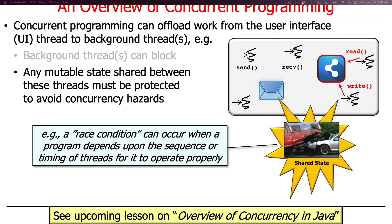Unlike sequential programs, any mutable state shared between multiple threads must be protected to avoid concurrency hazards. Mutable state refers to fields or variables that can be shared between threads and read or written. In Java, this could be a static field or a field in a singleton with global scope across multiple threads. If threads are reading and writing to that state, you must protect it. We'll cover concurrency hazards in a separate lesson.